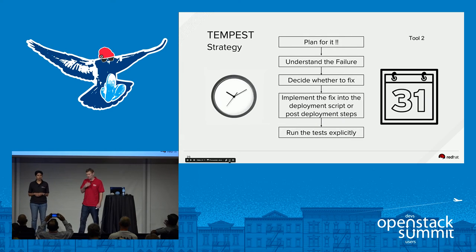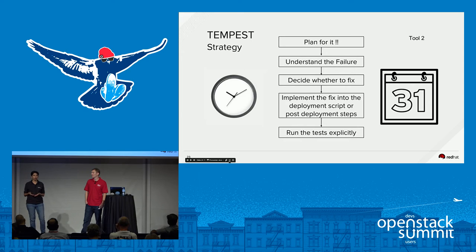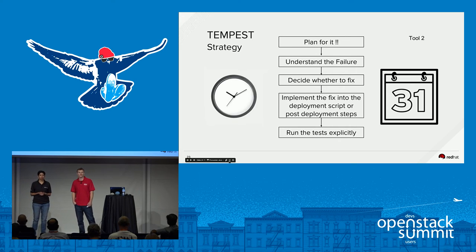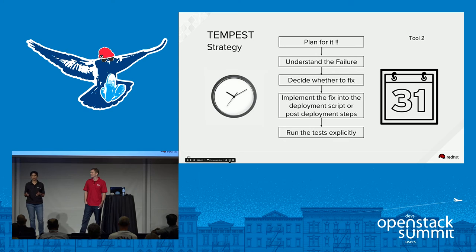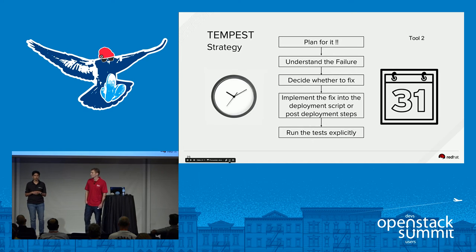My strategy for Tempest testing: plan for it — don't leave it for two hours before you tell your manager it's done or going into production. Understand the failures and figure out if you care about them — for example, I may not care about EC2 test cases that fail. Take time to debug the test cases that are failing. What I find most useful is running test cases explicitly from a file rather than the default list. Put all the test cases you care about in a file and specify that file when running Tempest. That way, when you have any upgrade — major or minor — you run against the same list and know exactly what failed. I would go so far as to say use version control on this test file.